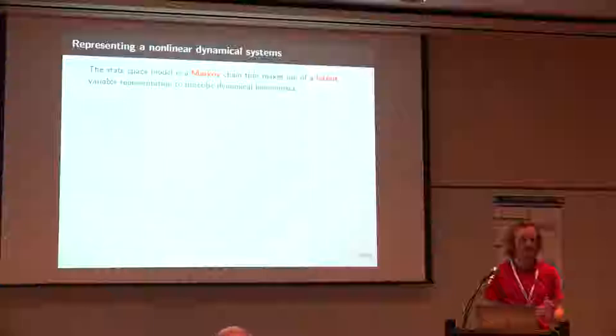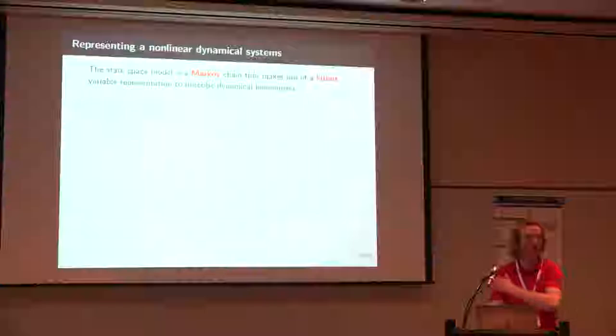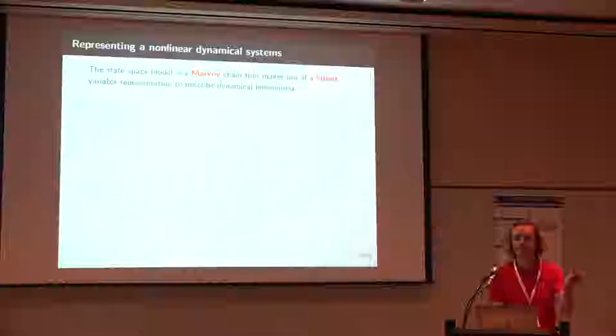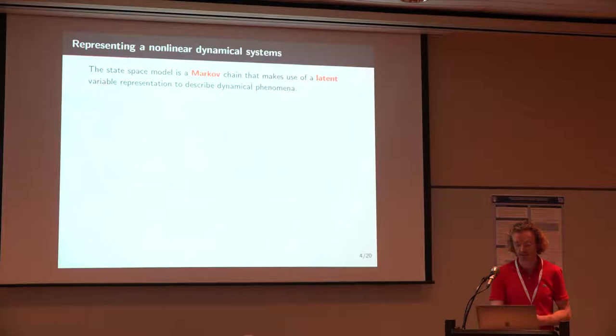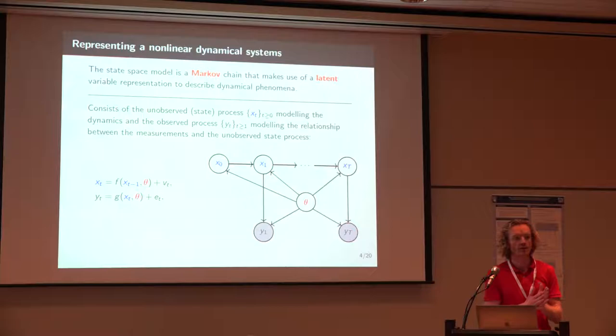So how do we represent the nonlinear dynamical systems? Well, typically we use a Markov chain, which makes use of a latent representation of the thing we want to model. When you receive measurements of a ground distance, that's your measurement, and the state x is your latent Markov space. So these are two variables. The blue is the Markov chain, the x, which is modeled as some nonlinear change based on the previous steps and some noise on top of that, and then some measurement equation that tells you how are your measurements related to that state.